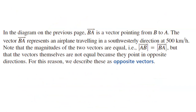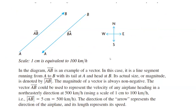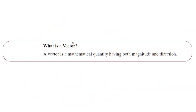Vector BA points from B to A and represents an airplane traveling in a southwesterly direction at 500 kilometers per hour. Note that the magnitudes of vectors AB and BA are equal, but their directions are different. A vector is a mathematical quantity having both magnitude and direction — let's write down this definition.